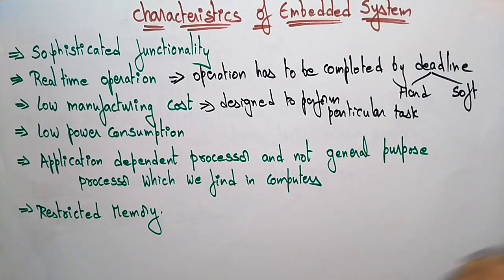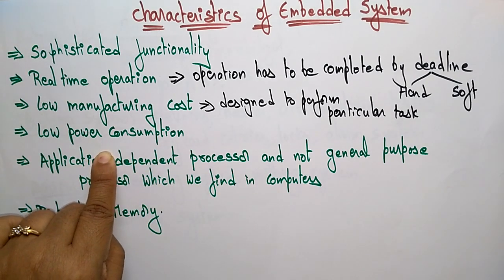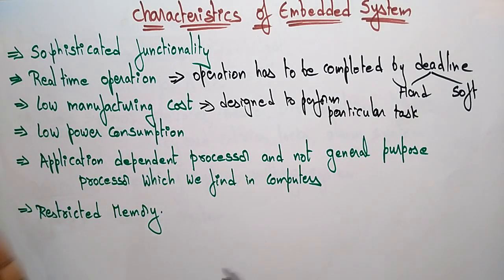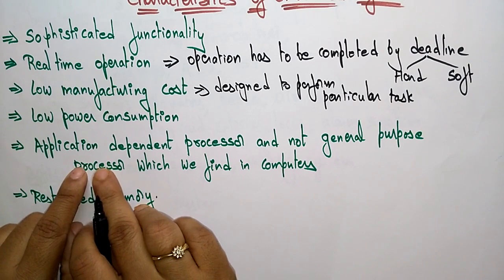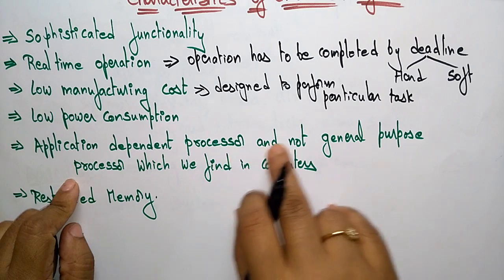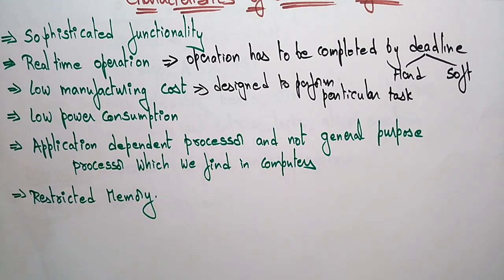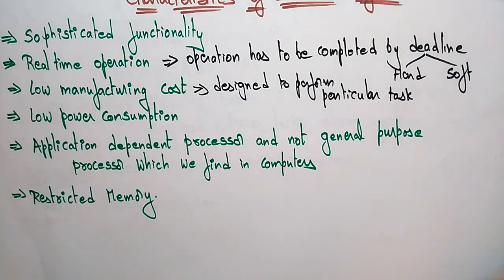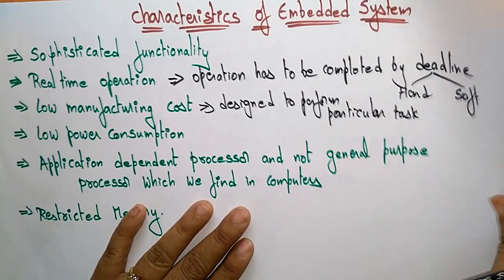Because it performs only a single task, the manufacturing cost is reduced. Similarly, the power consumption is also less when compared to general purpose systems. Embedded systems use an application-dependent processor, not a general purpose processor like those found in computers. Additionally, embedded systems have restricted memory — whatever appliance you take, there is restricted memory available.